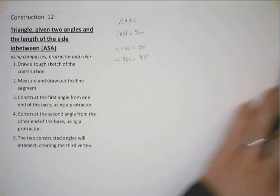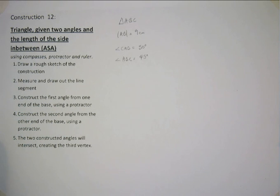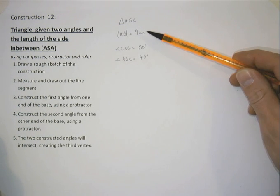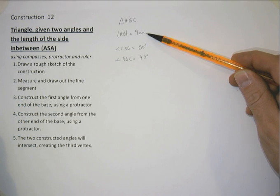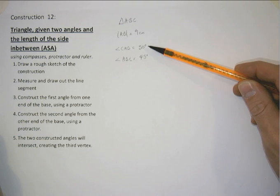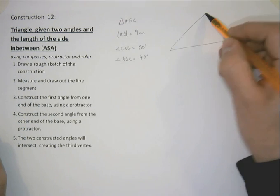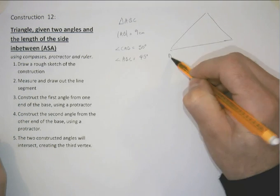So firstly we need to visualize what we're going to be creating so that we don't make any mistakes. So let's assume we've got a triangle ABC where one side AB is 9cm and that angle CAB is 50 degrees and angle ABC is 45. So let's just visualize that, let's draw ourselves a triangle, just a sketch, ABC.